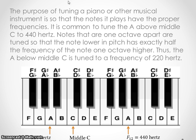All right, so the purpose of tuning a piano or other musical instrument is so that the notes it plays have proper frequencies. It is common to tune the A above middle C to 440 hertz. So if you're familiar with the piano, middle C is literally the C that falls in the middle of a piano keyboard. This is not the whole keyboard here. And the letters just repeat themselves.